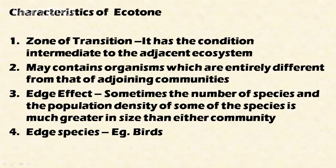What are the characteristics of ecotone? First, it is a zone of transition with conditions intermediate of the adjacent ecosystems. Another characteristic is that it may contain organisms which are entirely different from those of the adjoining communities. For example, a mangrove ecosystem can contain organisms entirely different from those of the forest ecosystem and the river ecosystem.